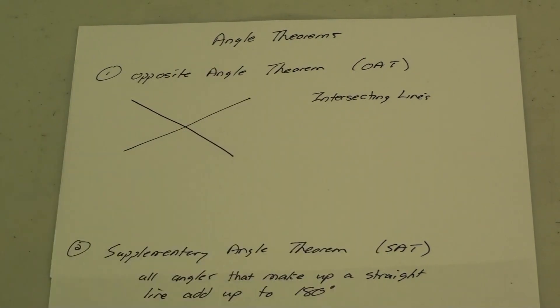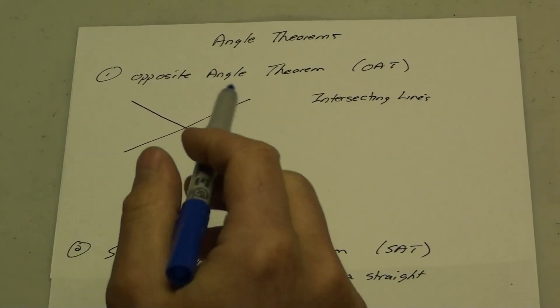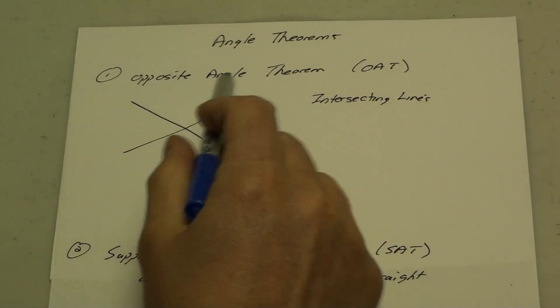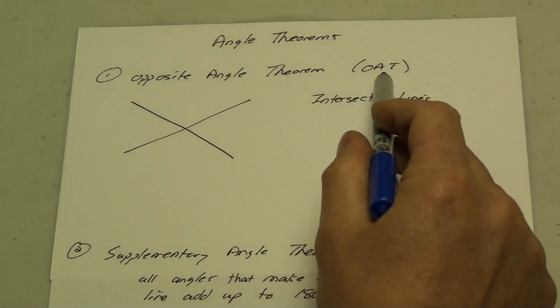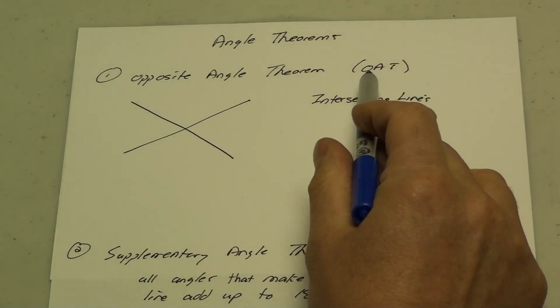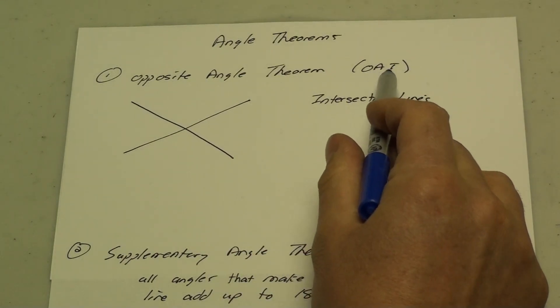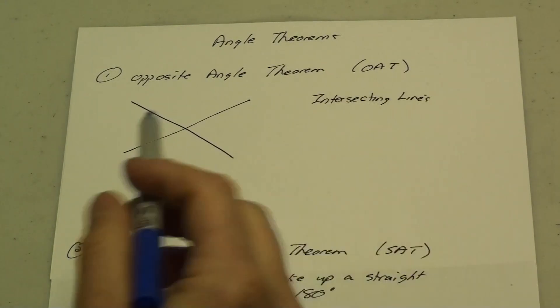In this lesson we're going to look at some angle theorems. The first angle theorem we're going to look at is called the Opposite Angle Theorem, also known as OAT, Opposite Angle Theorem.